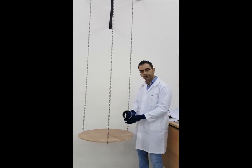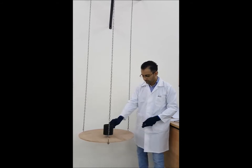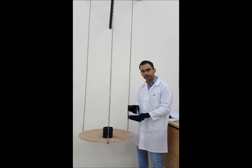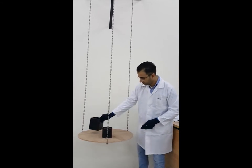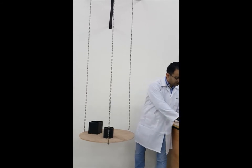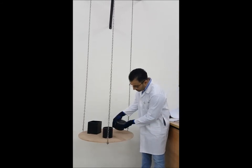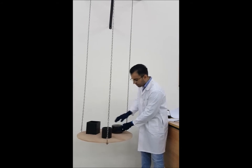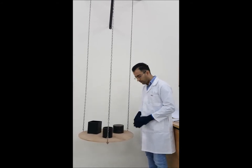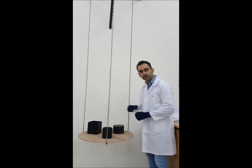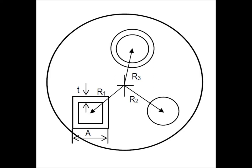We have a hollow cylinder, a square section, and a solid cylinder. You are going to place these objects at different distances from the center of the suspension, where you will measure R for each of them.